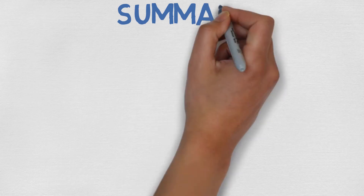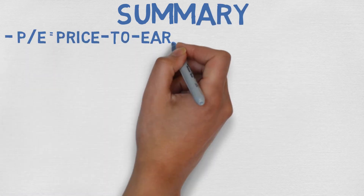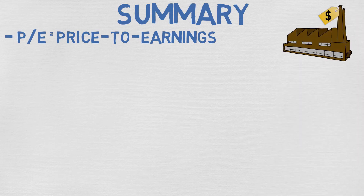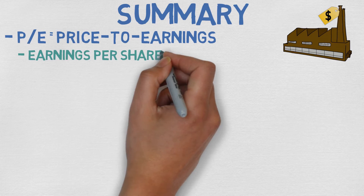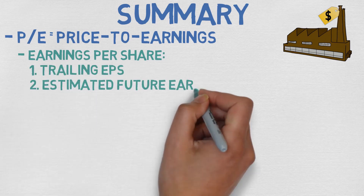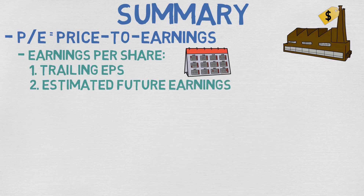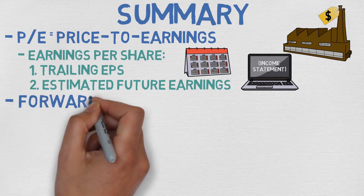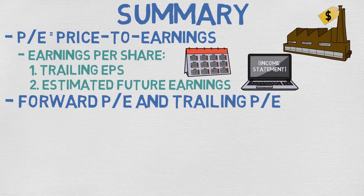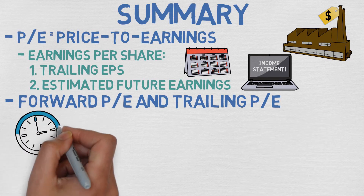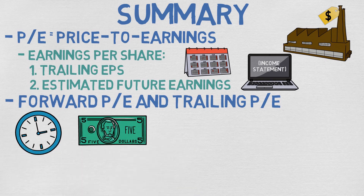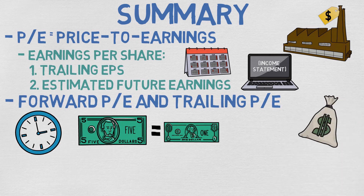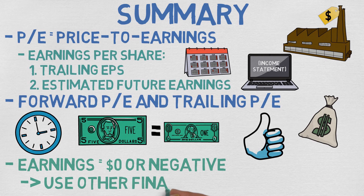Let's quickly take a look at the main points of this video. PE ratio comes from the words price to earnings — the price is the current share price and earnings means earnings per share. EPS has two variations: trailing EPS for the past 12 months and estimated earnings for the future. Because there are two EPS variations, there are also two PE ratio variations: forward and trailing. The PE ratio tells you how long it takes for your investment to be paid back, how much you are willing to pay for one dollar of earnings, and whether the company is correctly valued. If earnings are zero or negative, use other financial ratios to analyze the company.